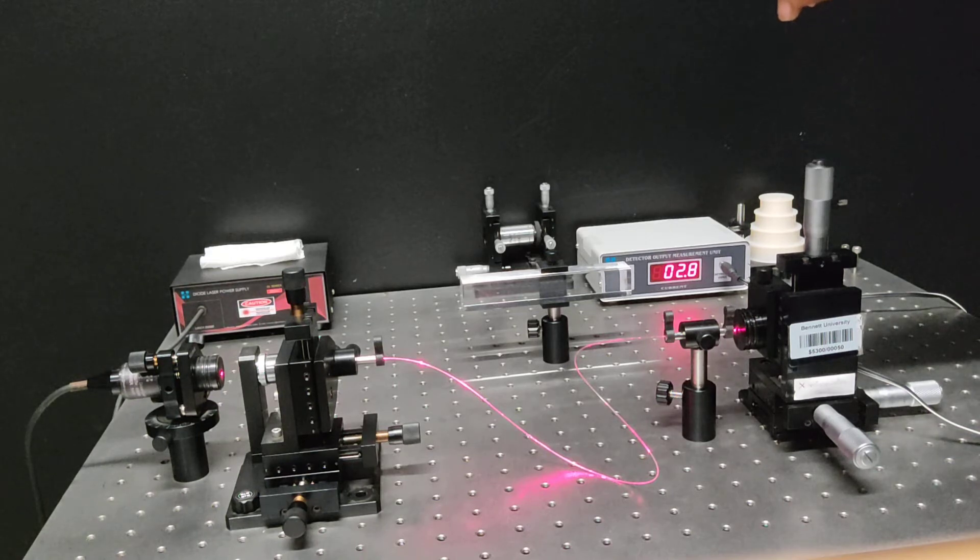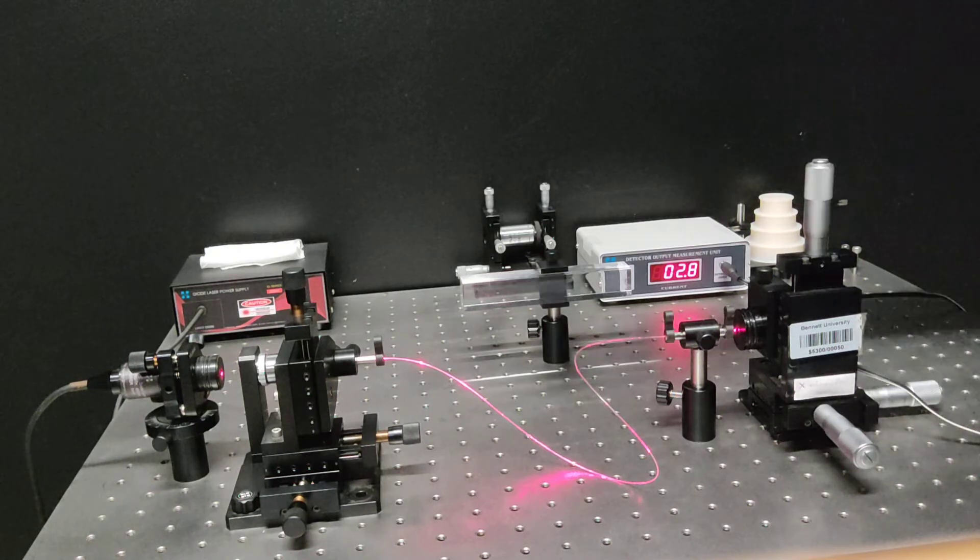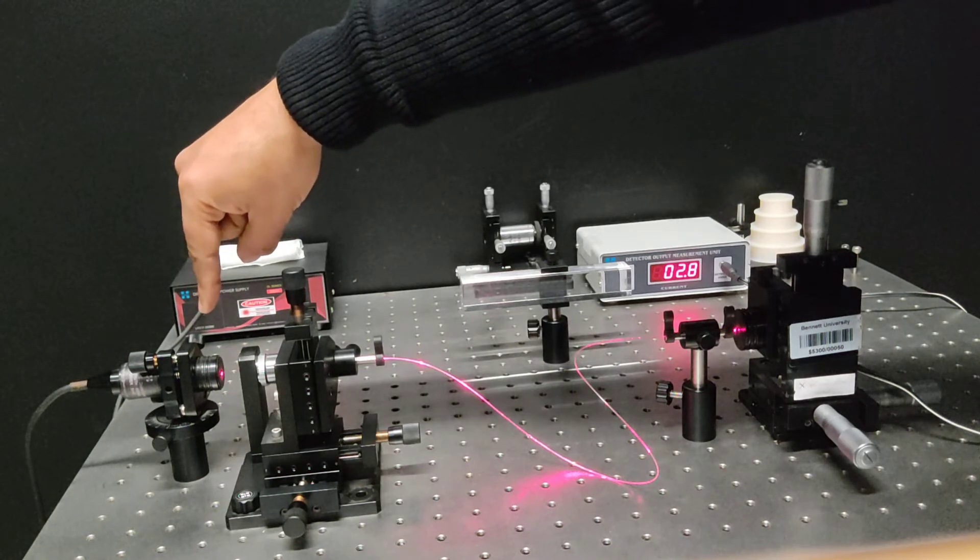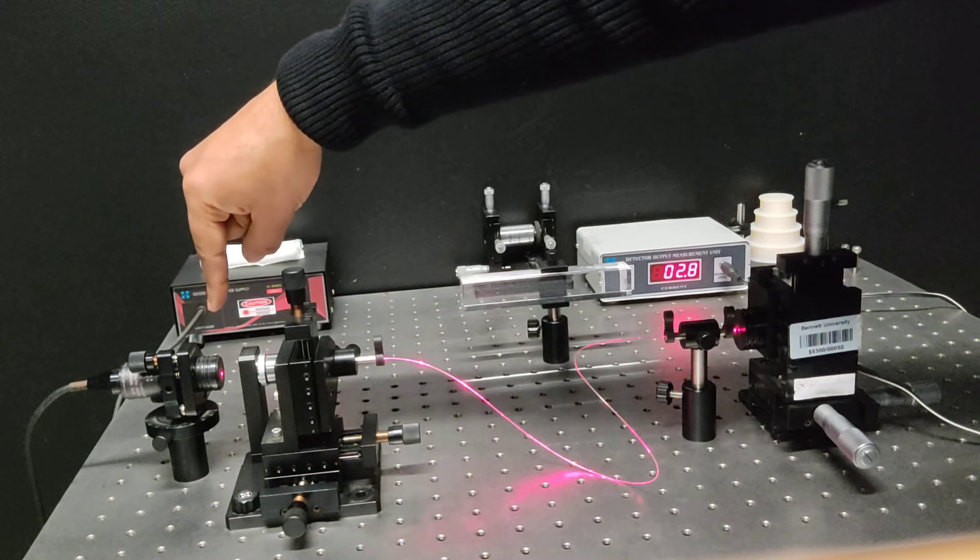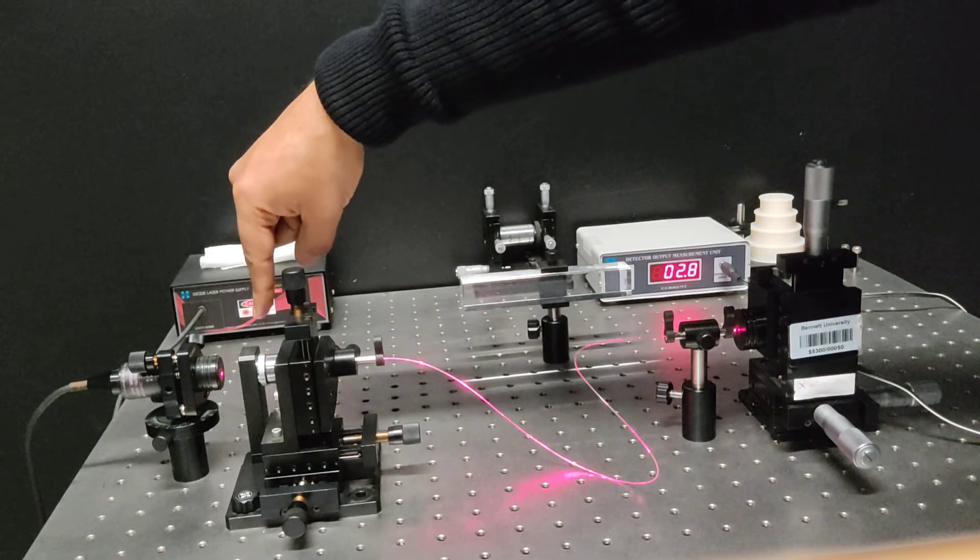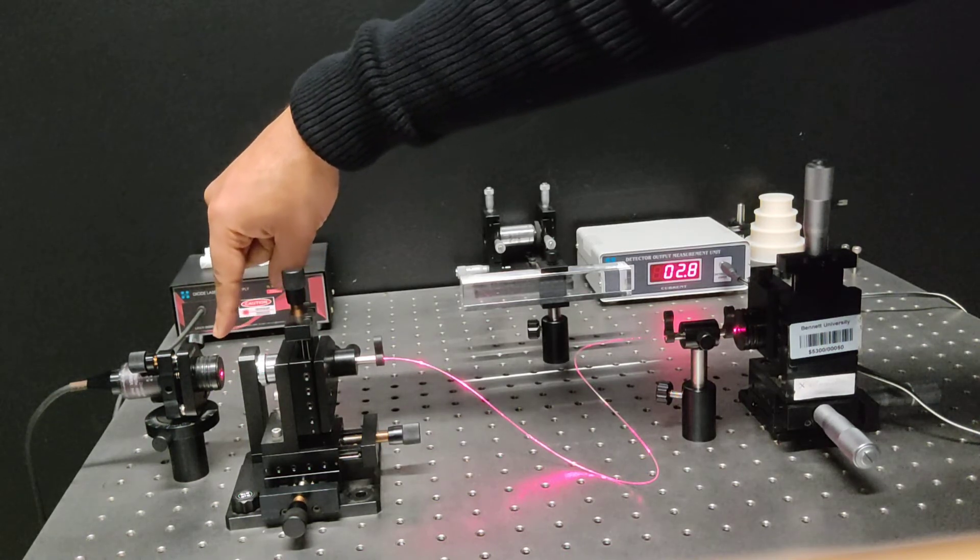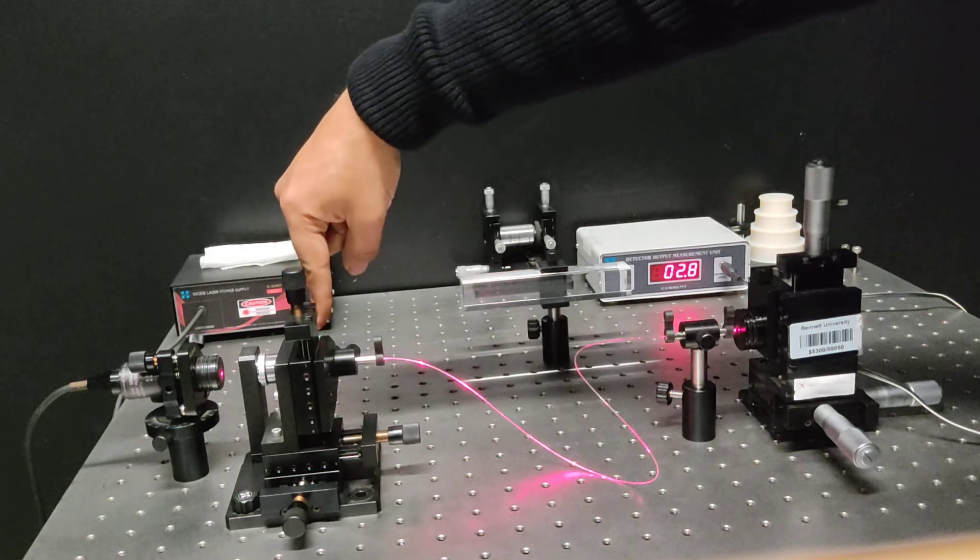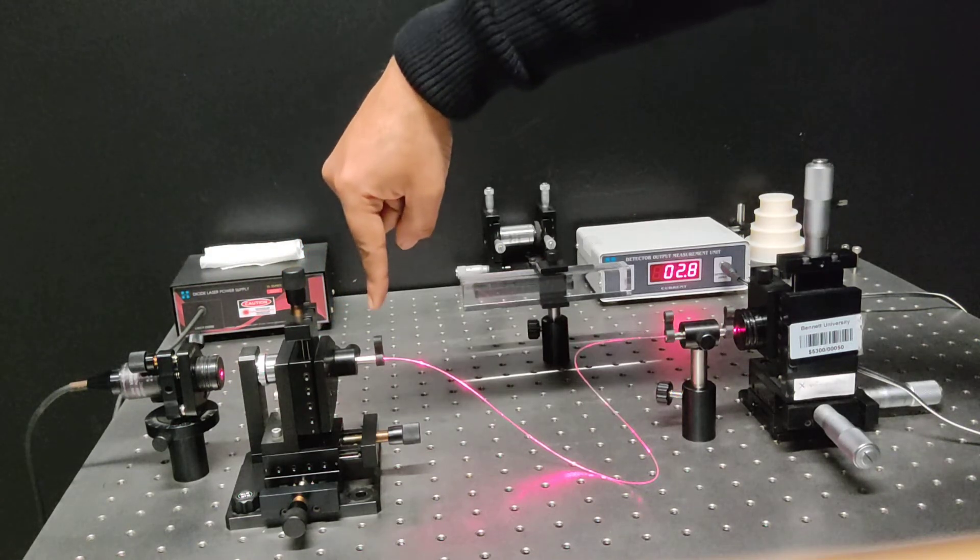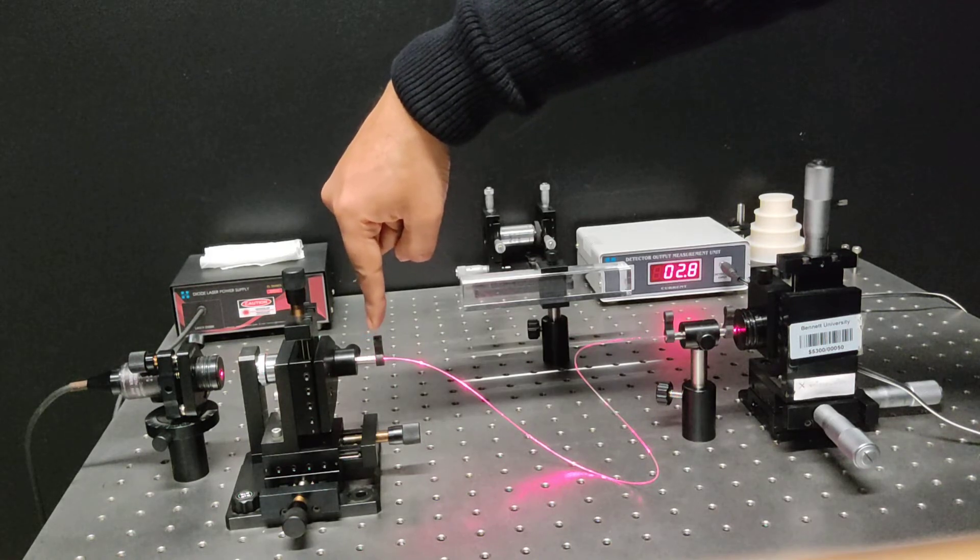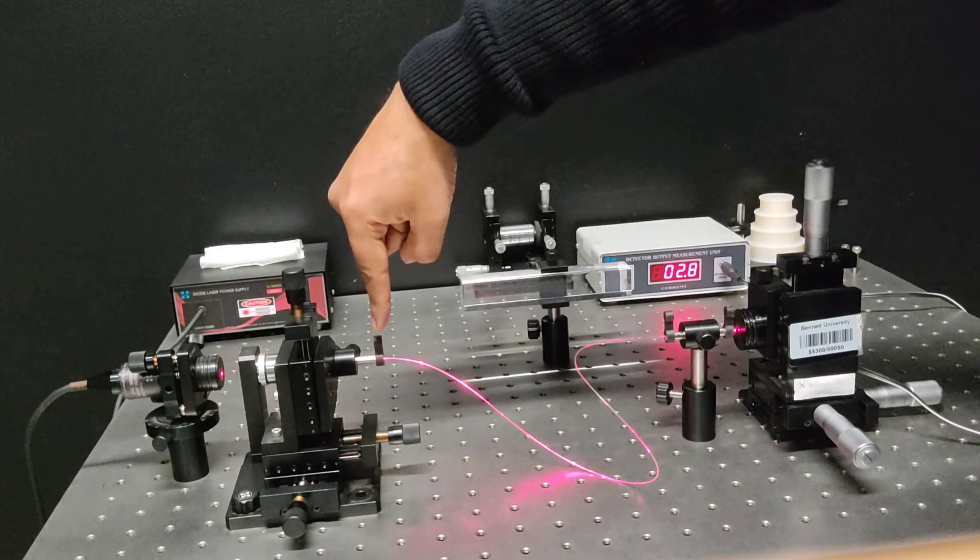Here once again the laser is now straight and that laser will fall to this microscope objective whose main motive is to couple the light from the laser to the fiber. The fiber is kept on a fiber chuck and tightened by using this rubber cap.